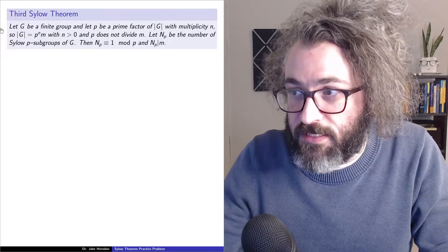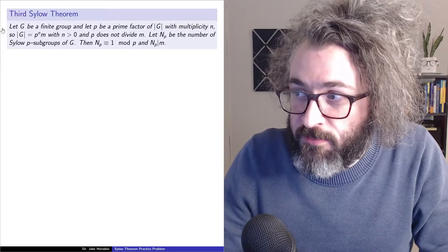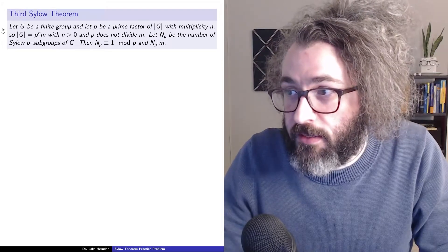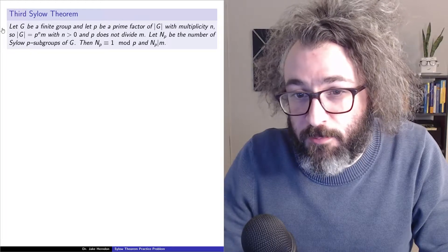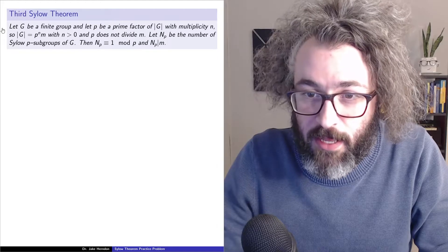Let G be a finite group, and let p be a prime factor of the order of G with multiplicity n. That means that the order of G is equal to p to the nth power times m, where n is greater than 0 and p does not divide m.